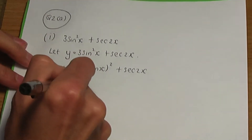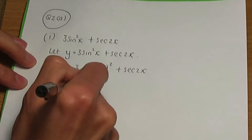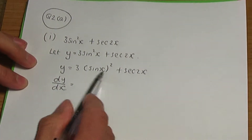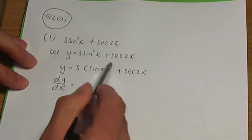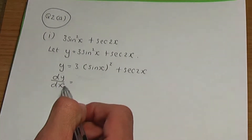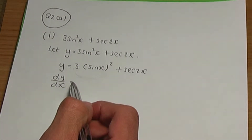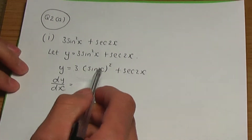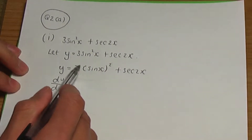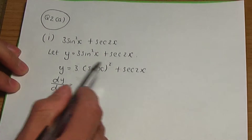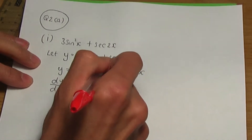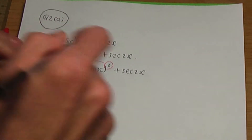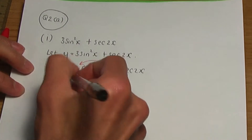Let's work out dy by dx. To differentiate the first term we can use the chain rule. To differentiate a term like this, provided that the term in front of your bracket is a constant and if you have a power, the idea is you first multiply by the power. The power is 2, so 2 times the 3 in front is 6.